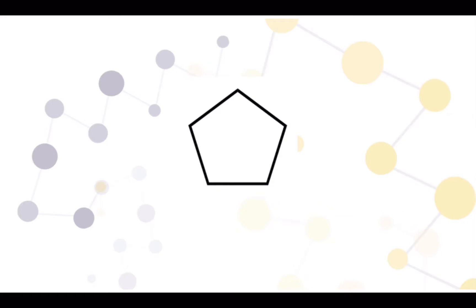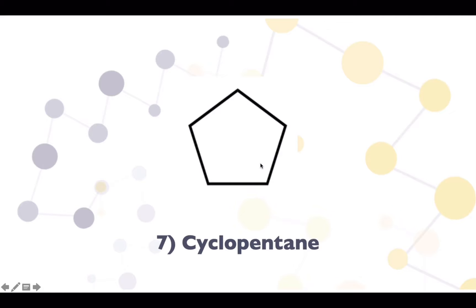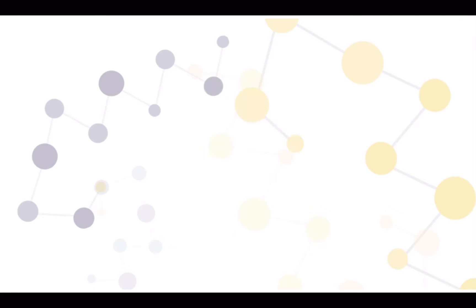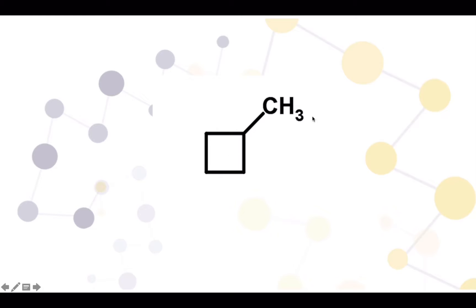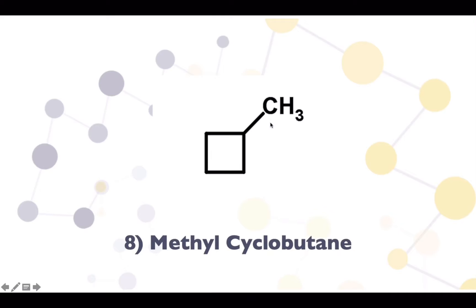Now we get into the cycloalkane molecules. Alkene is similar to cycloalkane in terms of molecular formula, so pentene has both alkene isomers and cycloalkane isomers. The first cycloalkane isomer is cyclopentane. Next, we have a four-membered ring with one methyl group attached, which we name methylcyclobutane.